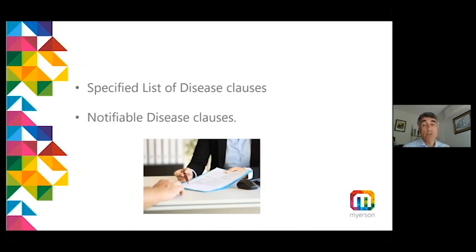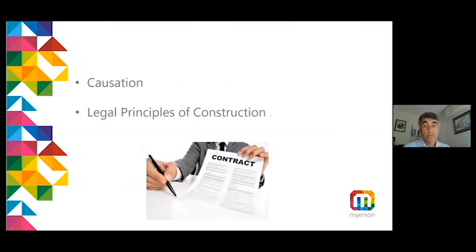Having established whether the wording in your policy covers the type of event which might trigger a claim, the next legal argument likely to feature in these claims is the issue of causation. The policy wording and the financial calculation of losses suffered have to be linked — the law refers to this link as causation. Fortunately, the courts have avoided laying down any formal test for causation. They have relied on common sense to guide decisions as to whether the event is a sufficient substantial cause of the loss, and whether the event was the cause of the loss or merely the occasion for it.